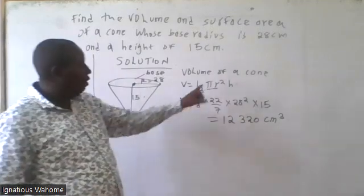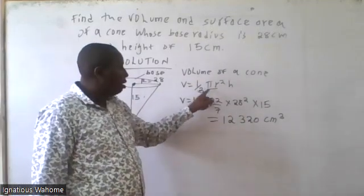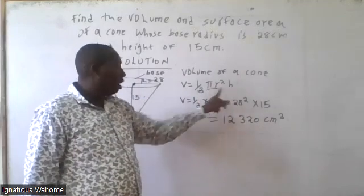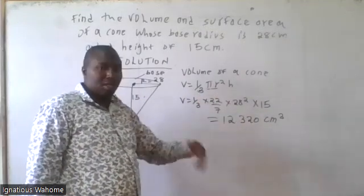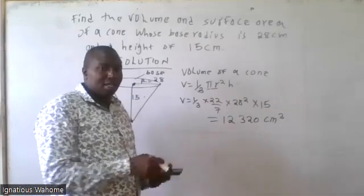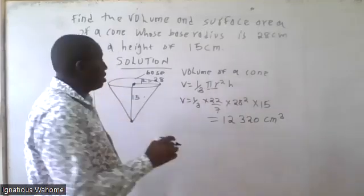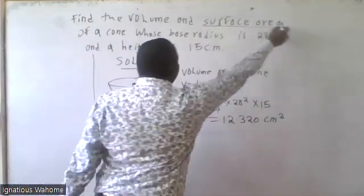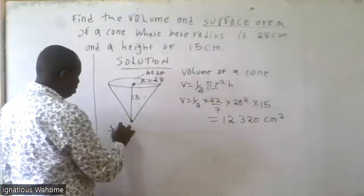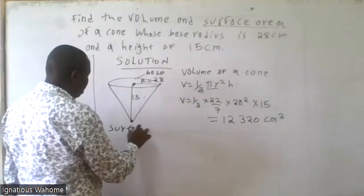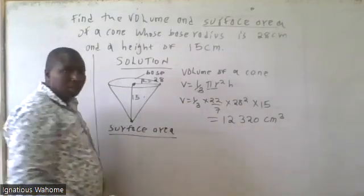You only need to understand the formula for finding the volume: one-third times pi r squared times h. Substitute the values and you get the answer. Next, we have to find the surface area of this cone.